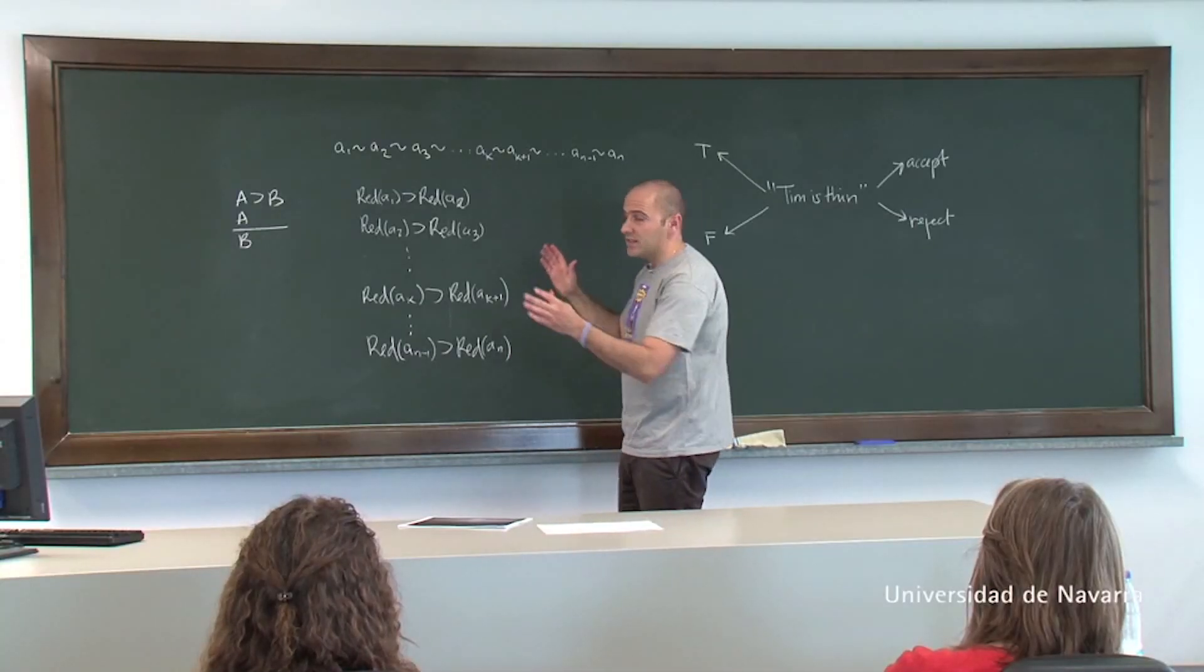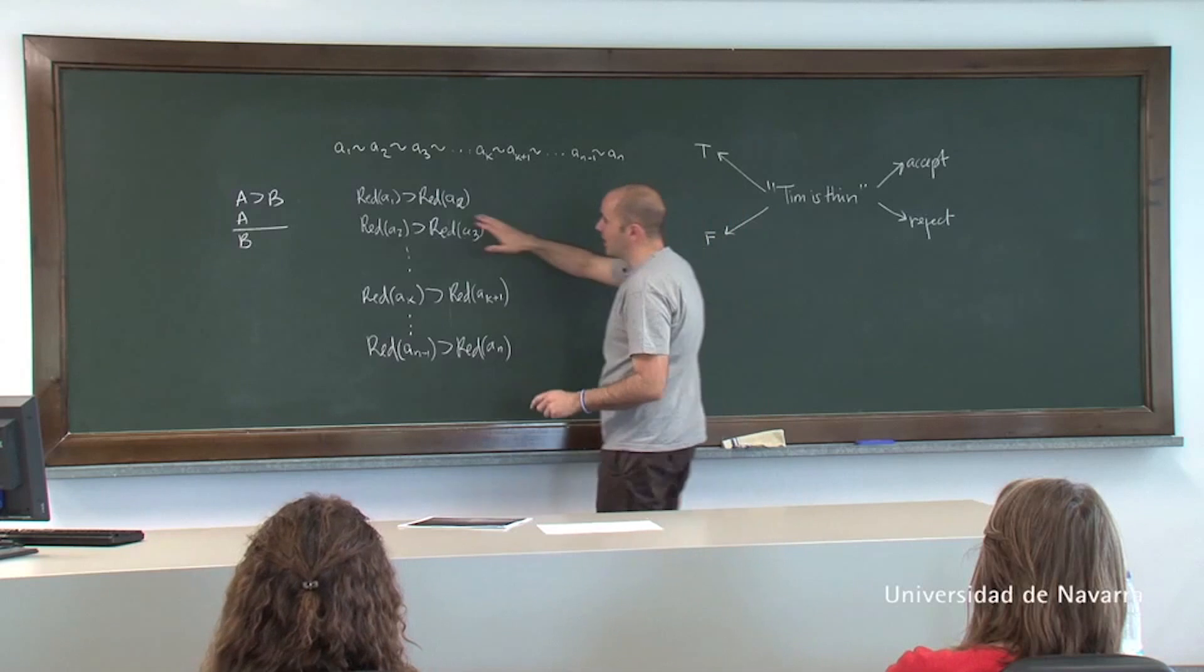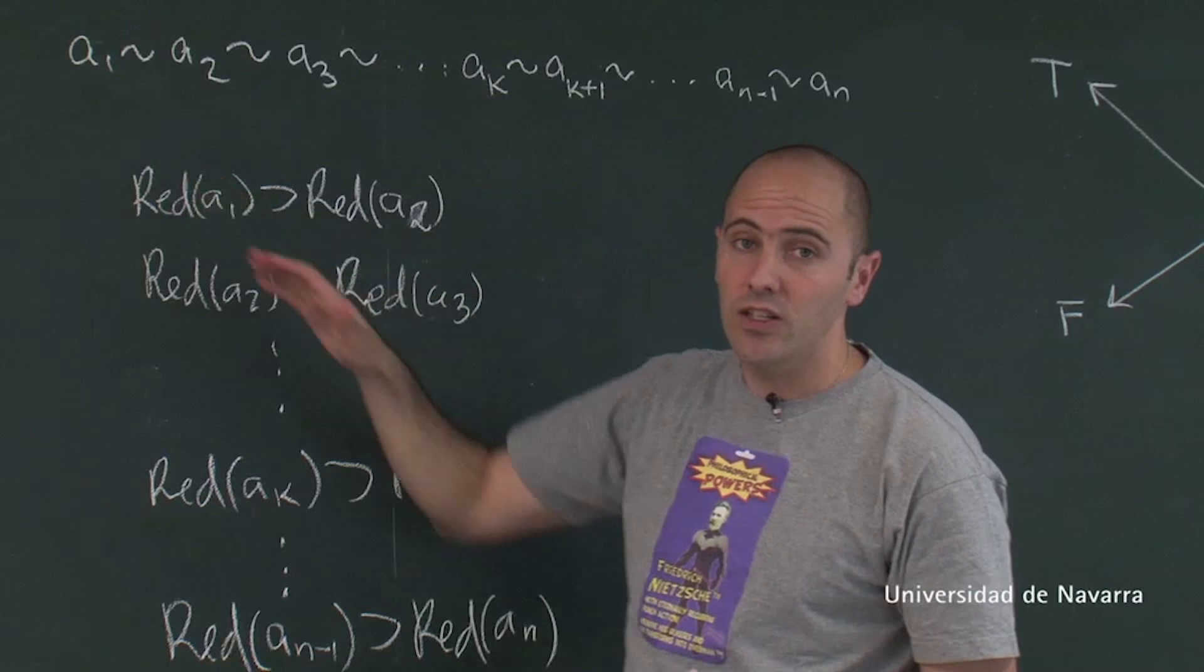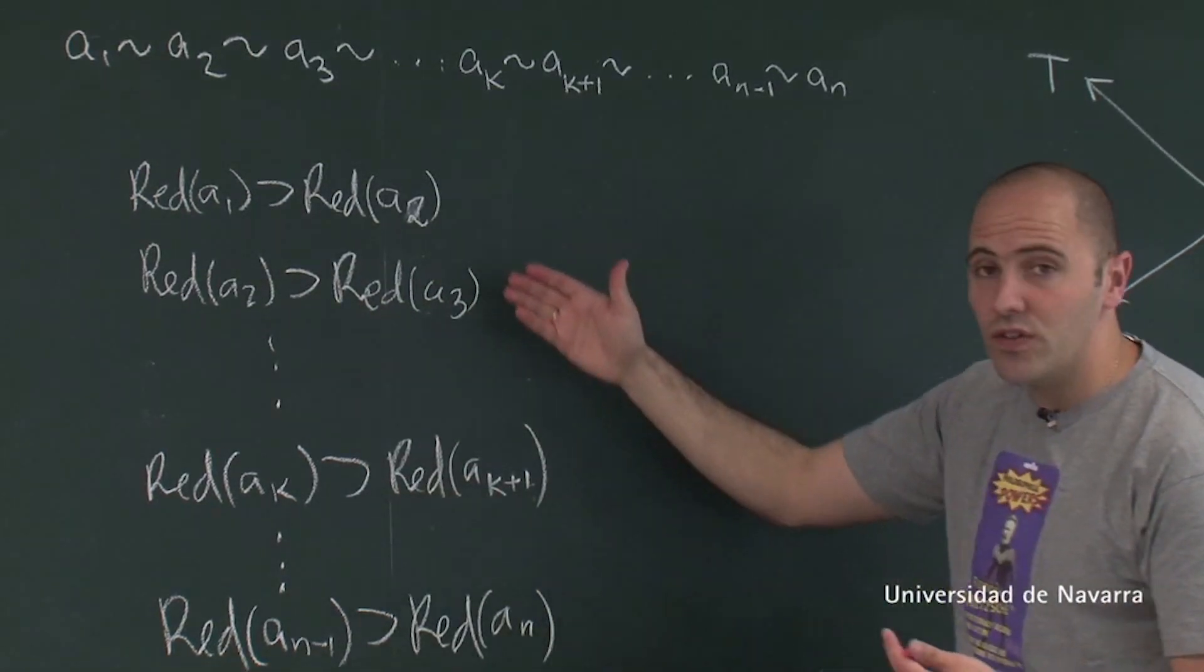So consider the situation. This is a very long series, and this one is clearly red. This one cannot be discriminated from this one, so it seems that all these conditionals—if the first one is red,